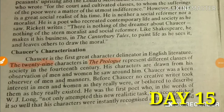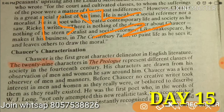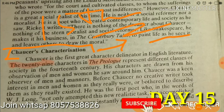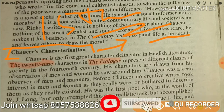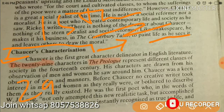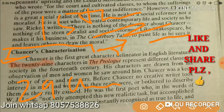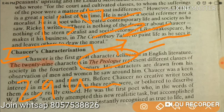Hello guys, you are most welcome. This is the 15th day of History of English Literature, and today's topic is Chaucer's characterization. There are a lot of questions in exams about this topic. The first thing to know is that there were 29 characters described in a great manner in the Prologue.